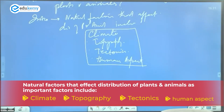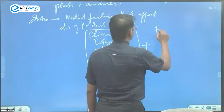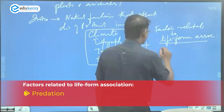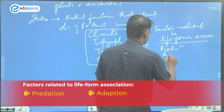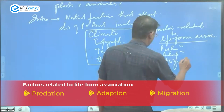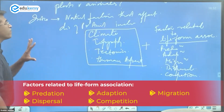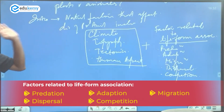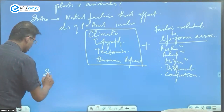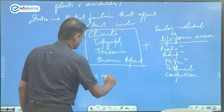To these we add factors related to life form associations: predation, adaptation, migrations, dispersal, and competition. These are the main factors that affect plant and animal distribution. In this list, soils are not as important or decisive a factor.